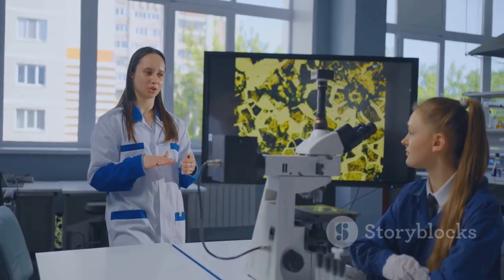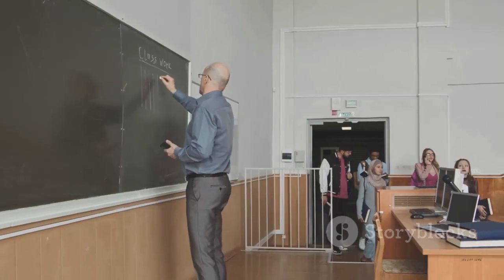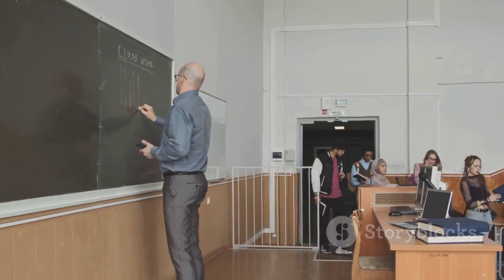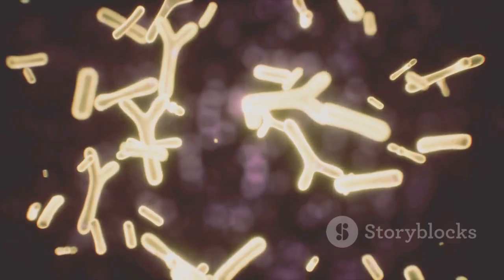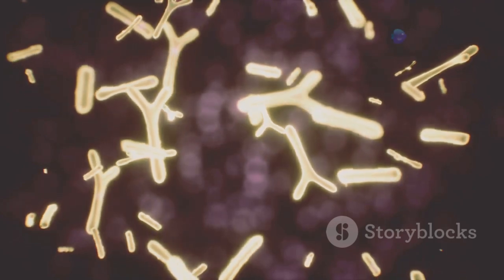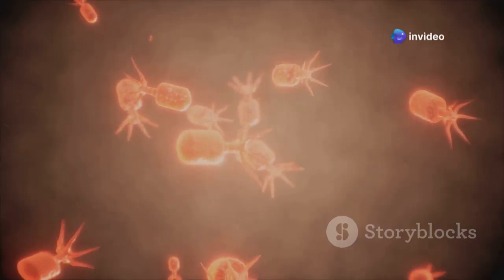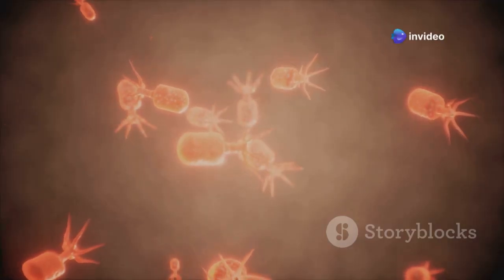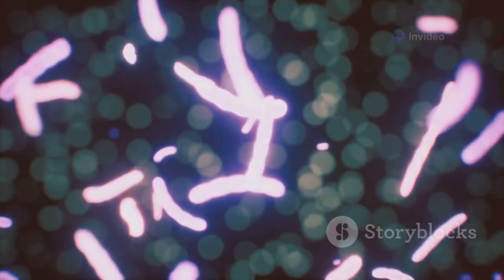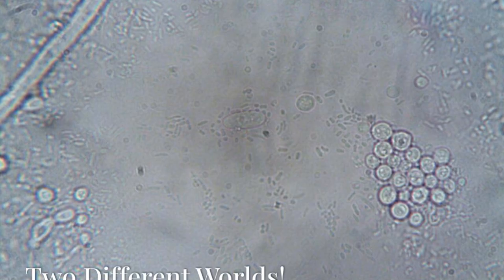Let's kick things off with the cell theory, the foundation of cell biology. This theory has three main points. First, all living organisms are made up of cells. Second, cells are the basic units of structure and function — think of them like mini-organs. Third, all cells come from pre-existing cells; cells arise from the division of other cells.